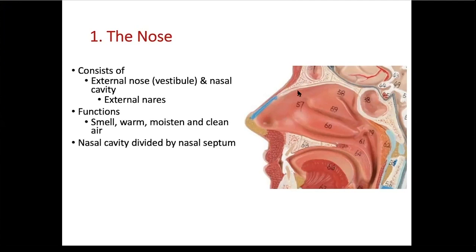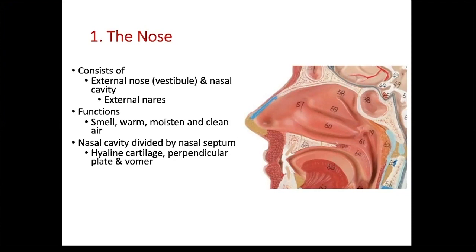The nasal cavity includes all of this area here, and it is divided into two compartments by a nasal septum — this is the wall. The term septum means a wall that separates your nasal cavity in two. Anteriorly, it consists of hyaline cartilage. Posteriorly, you have the perpendicular plate of the ethmoid bone at the top, which is the superior portion, and the vomer at the bottom, or the inferior portion.